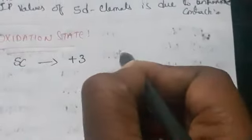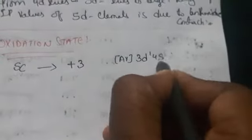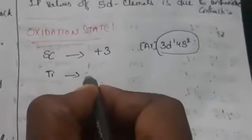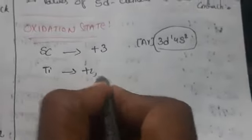Why is scandium having plus 3? When you observe the electronic configuration, the outermost electrons are 3d1 and 4s2, so how many electrons we are having — 3 electrons, so we have plus 3. Coming to next, titanium will exhibit plus 2, plus 3, plus 4.